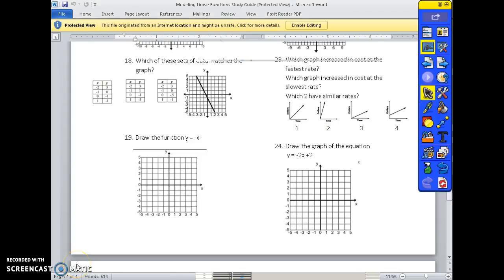Number 23. Which graph increased in cost at the fastest rate? So the one that increased the most that has the steepest slope is going to be number 2. Which graph increased in cost at the slowest rate? The lowest, smallest slope is going to be 3.